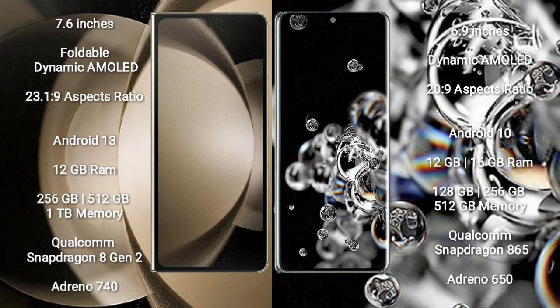Samsung Galaxy Z Fold 5 comes with 12GB RAM and 256GB, 512GB, or 1TB internal storage, with a Qualcomm Snapdragon 8 Gen 2 processor and Adreno 740 GPU. Samsung Galaxy S20 Ultra comes with 12GB or 16GB RAM and 128GB, 256GB, or 512GB internal storage, with a Qualcomm Snapdragon 865 processor and Adreno 650 GPU.